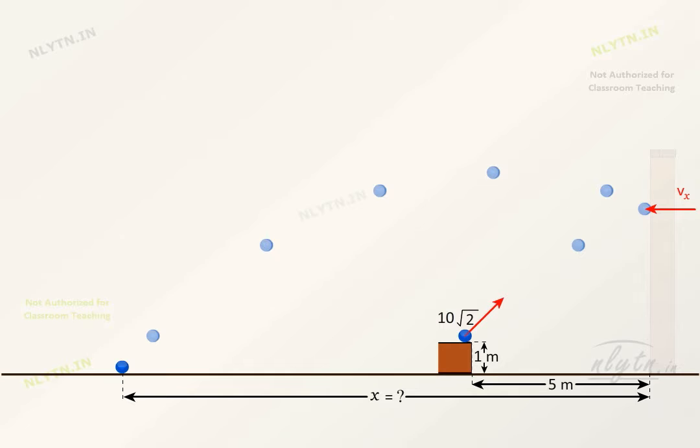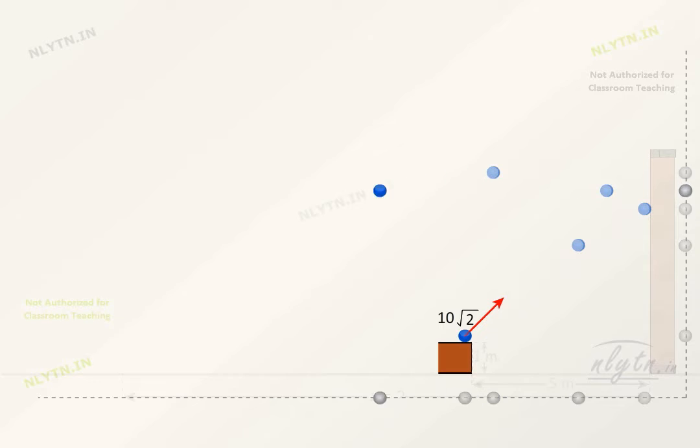This also means that the component parallel to the surface is not affected. So if we look at the motion for each axis, we will see that the y component goes as before and only the x component is affected due to the collision.